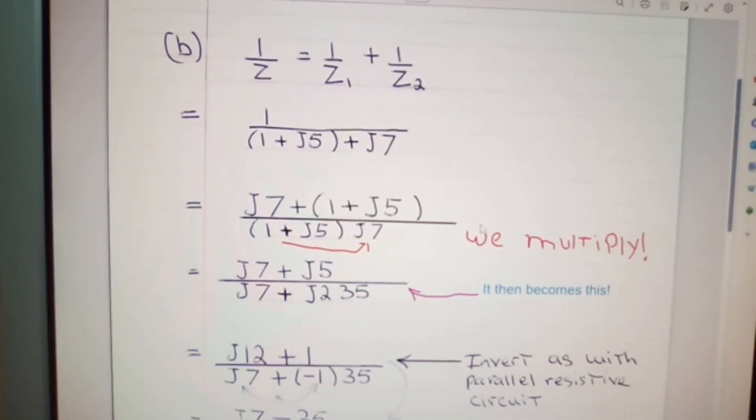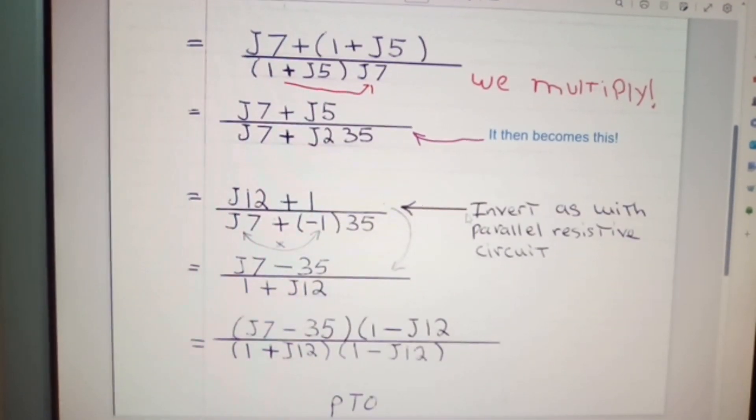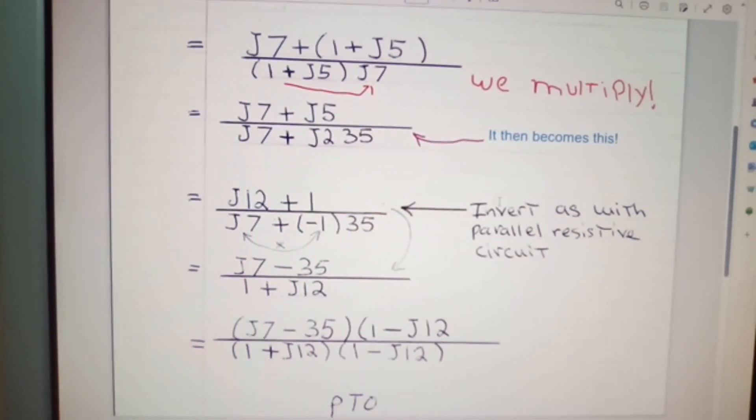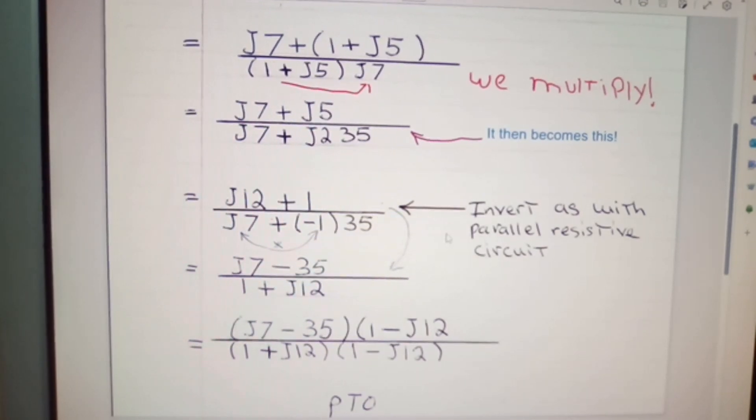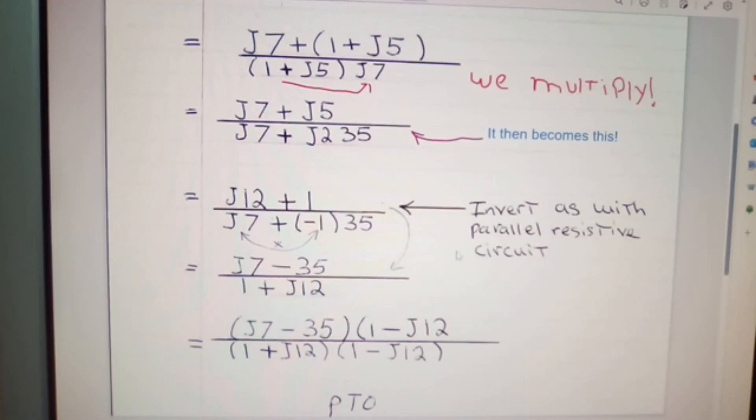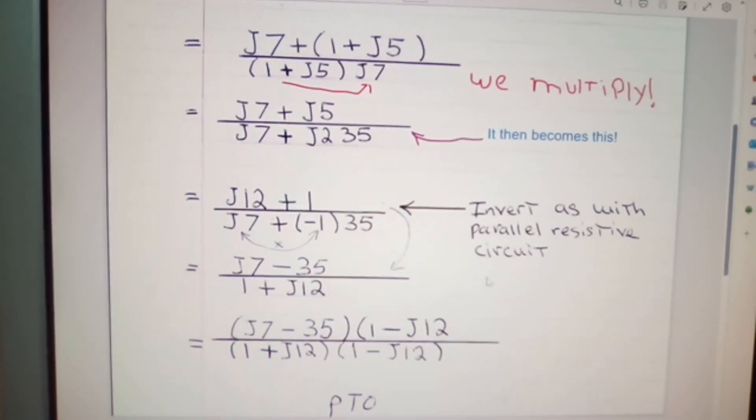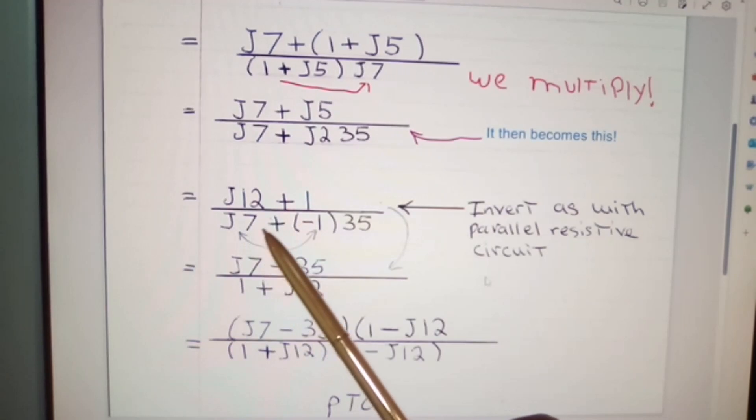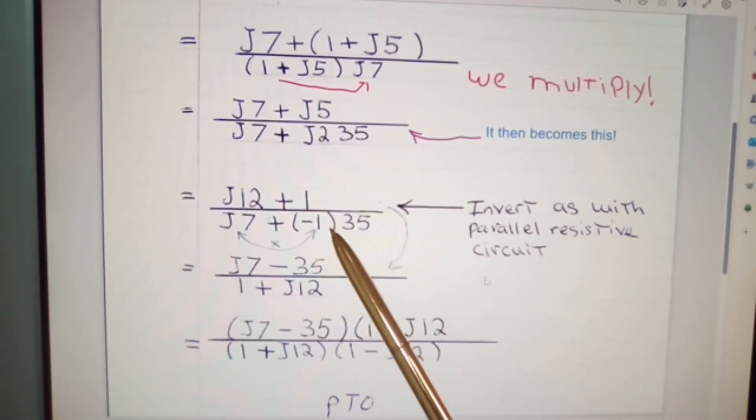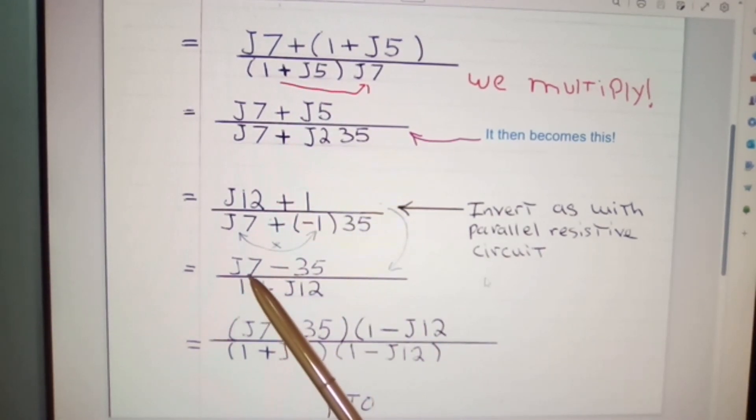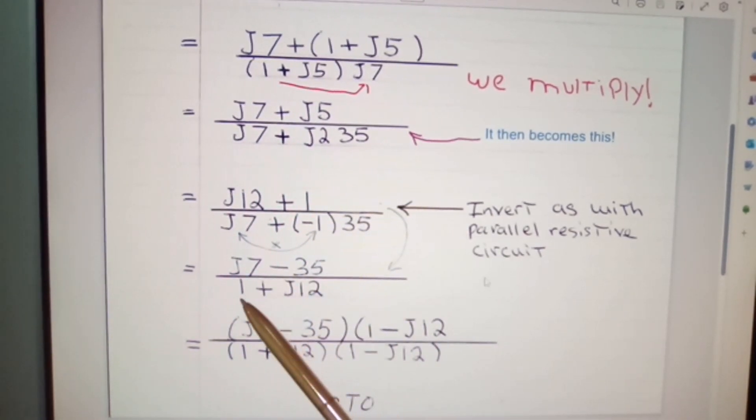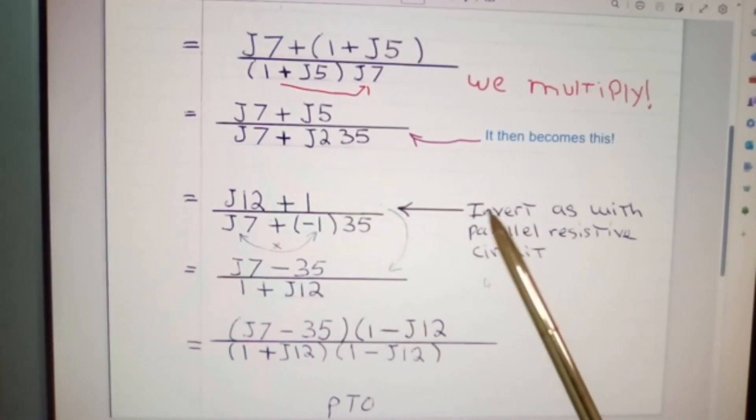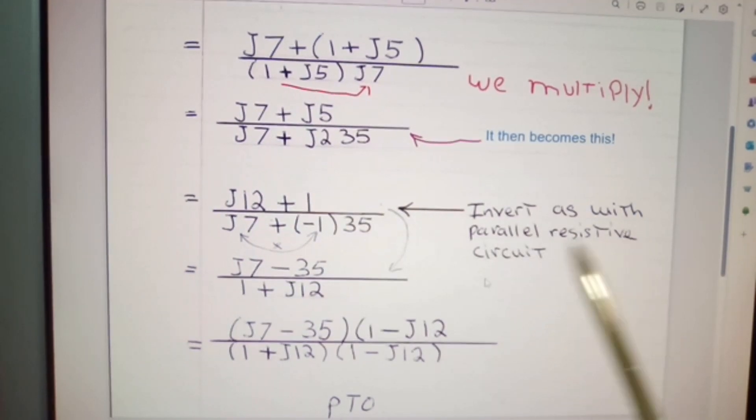These things happen, especially when you put the work down and you haven't looked at it for some weeks and you come back to do it. Again, it can be somewhat confusing. So confusion is not just your own privilege. We then invert as with parallel resistive circuits and we have J12 plus 1, over J7 plus minus 1, 35. That then gives us J7 minus 35 over 1 plus J12. Try and see how these equations have worked. And remember what I said here: invert as with parallel resistive circuits.